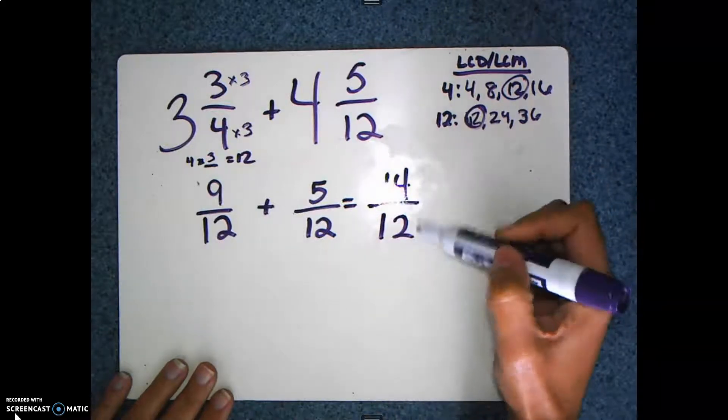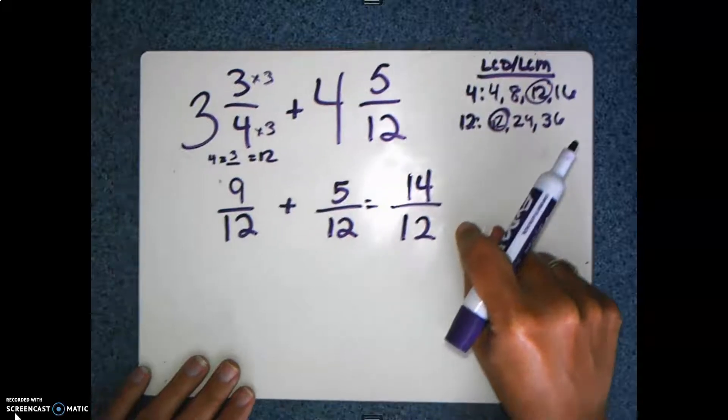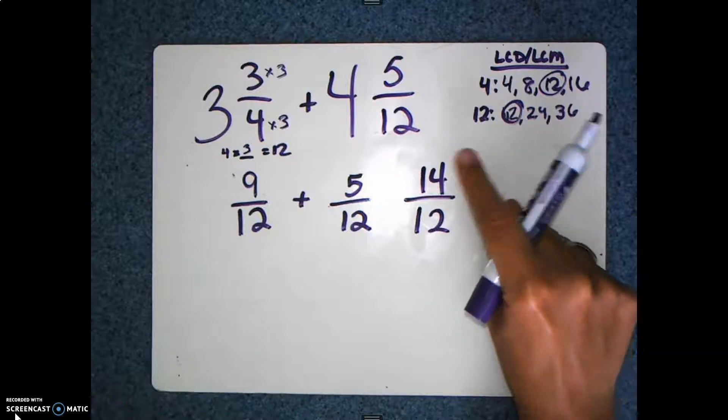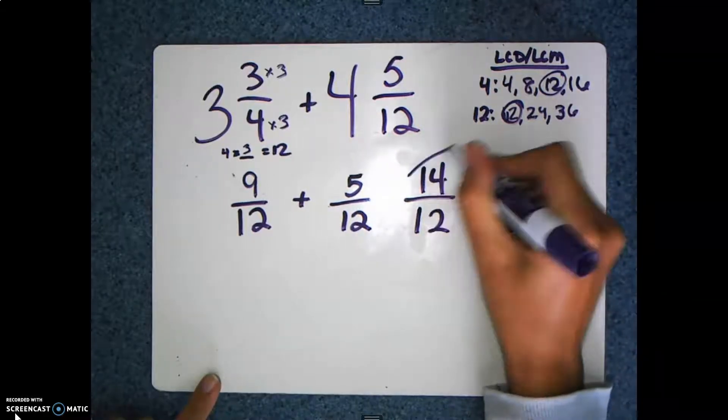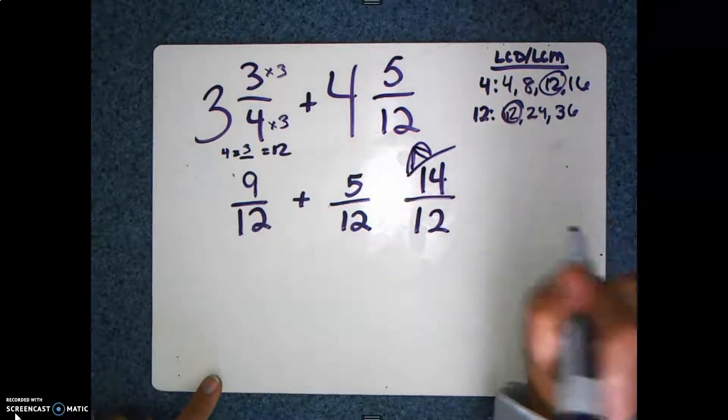Now, when you look at ¹⁴⁄₁₂, you can see that 14 is larger than 12. My numerator is larger than my denominator, which means that this is an improper fraction. And I put that cat on there sometimes to remember, the baseball cat, to make it improper.